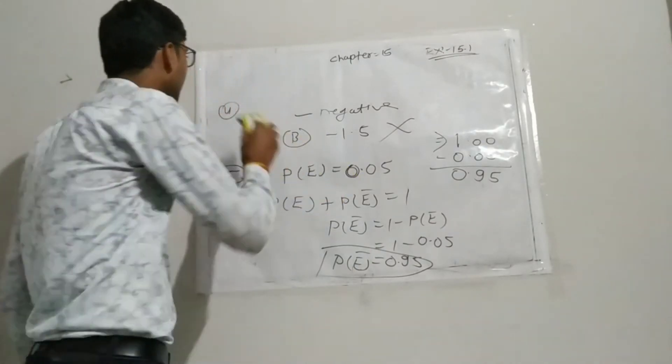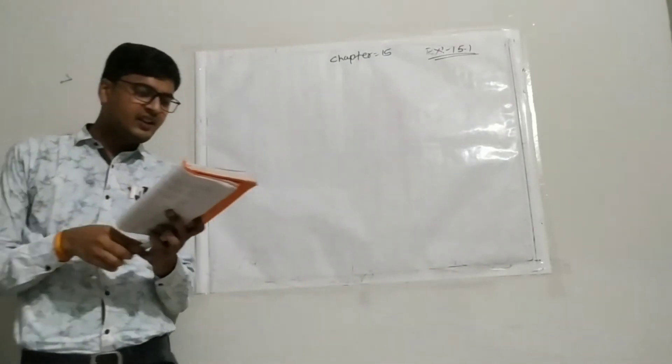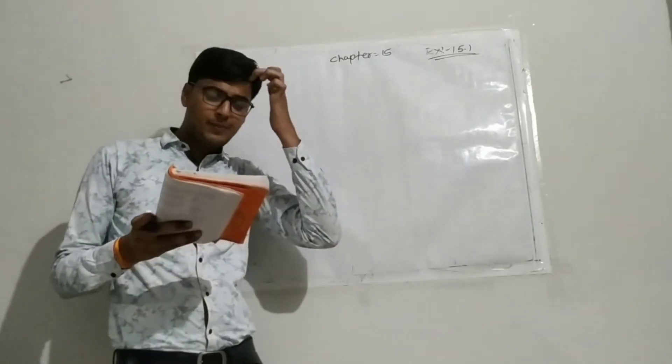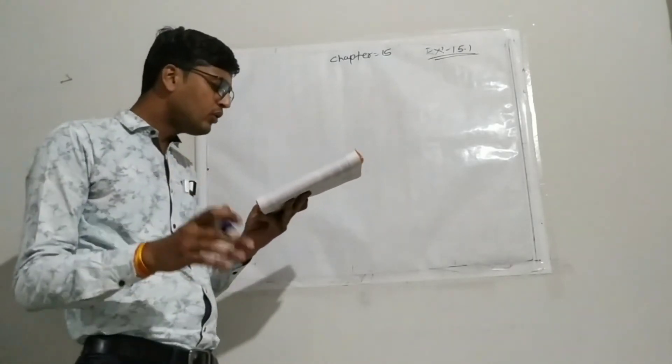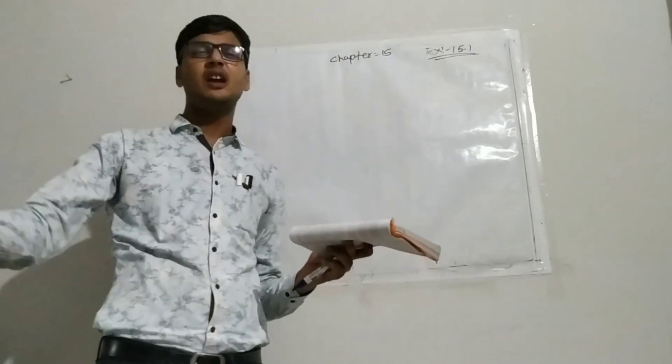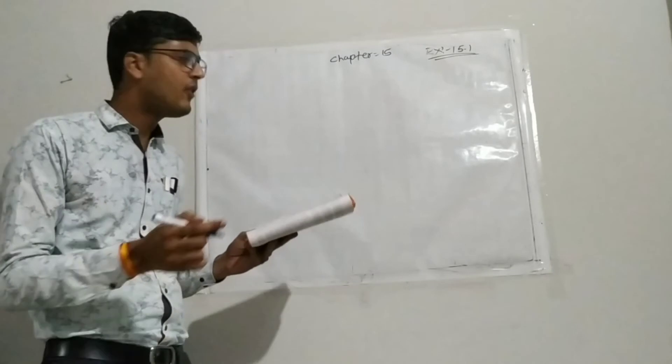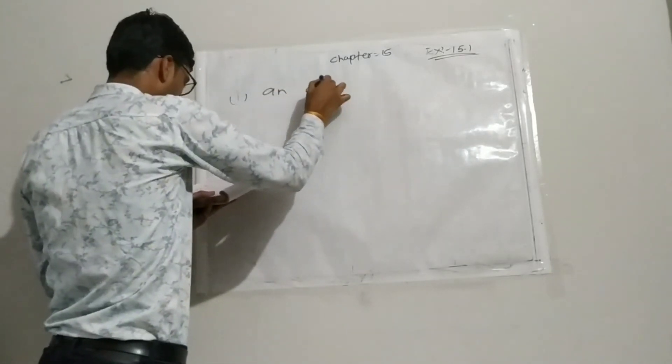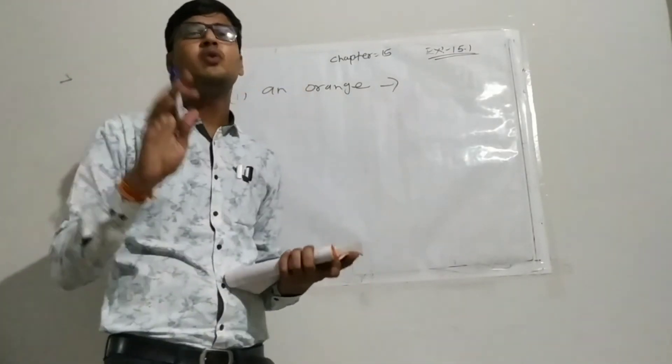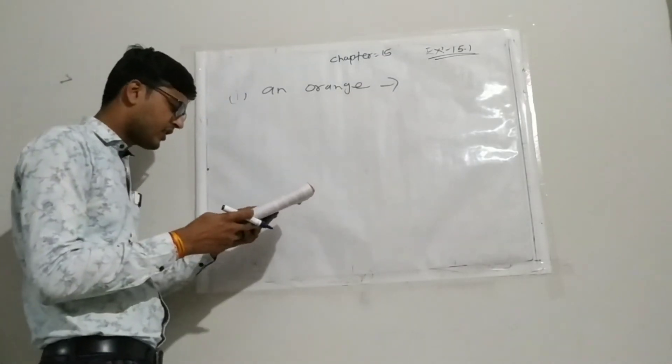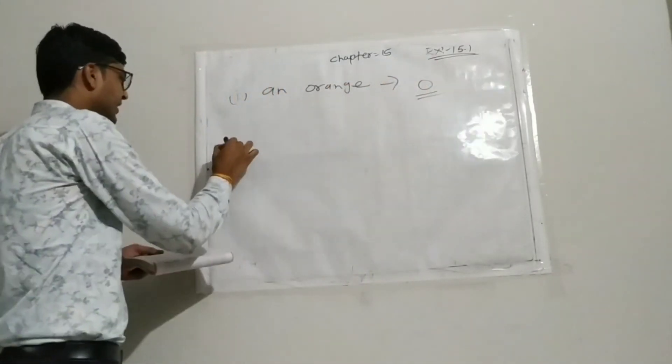Now question number six. A bag contains lemon flavor candy only. Malini takes out one candy without looking into the bag. She took out the candy without looking. What is the probability that she takes out two questions? First find an orange flavor candy. So we know in the bag only which flavor candy? Lemon flavor candy. So this probability is zero. An orange candy probability is simply zero.